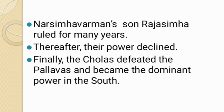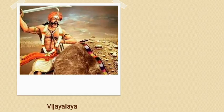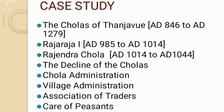Now look at the case study — The Cholas of Thanjavur, AD 846 to AD 1279. Initially the Cholas were subordinates (samants) of the Pallavas. In AD 846, Vijayalaya became their leader, and in AD 850, the Chola dynasty defeated the Madura chiefs and took control of Thanjavur, making it their capital. Vijayalaya's grandson Parantaka ruled here for 48 years and conquered the Pandyas of Madurai (present-day Chennai).